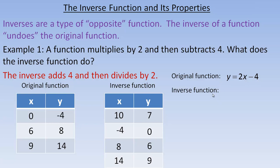The inverse function should have x and y switched — just like the ordered pair (6, 8) becomes (8, 6) and (9, 14) becomes (14, 9). So algebraically, if the original is y = 2x - 4, the inverse is x = 2y - 4. This is how you algebraically find the inverse. But we normally solve for y, because y is the dependent variable.